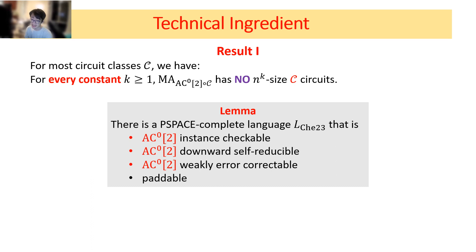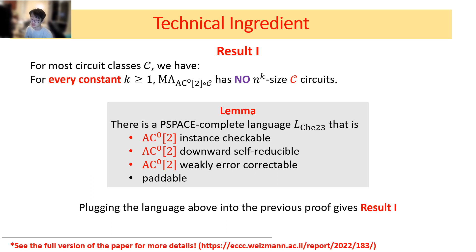Our goal is to improve the TC^0 above to ACC^0[2], and then we can improve result 1. And that's exactly what we did. We show that there's a PSPACE-complete language L that is ACC^0[2] instance checkable. And it's also ACC^0[2] downward self-reducible, ACC^0[2] weakly error correctable, and paddable. I'm not going to define the last three properties, but they are also useful in the proof. By plugging the language above into the previous proof, we can get result 1. The construction of the PSPACE-complete language is very complicated. I don't have time to go over the details, but you are welcome to check the full version of this paper for more details. Thanks.